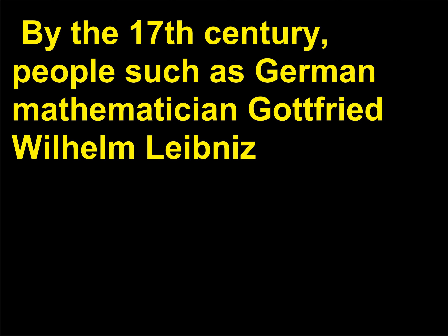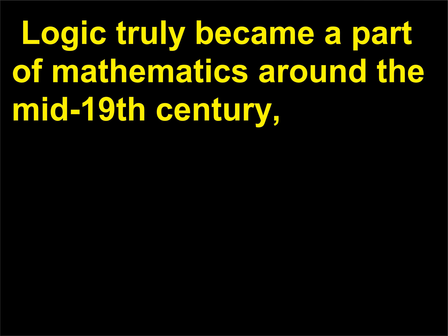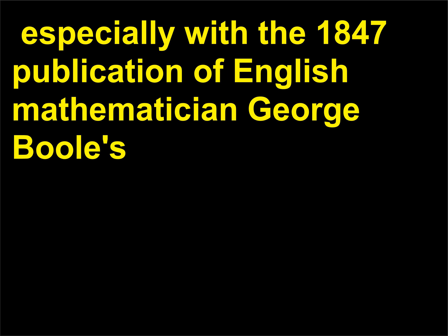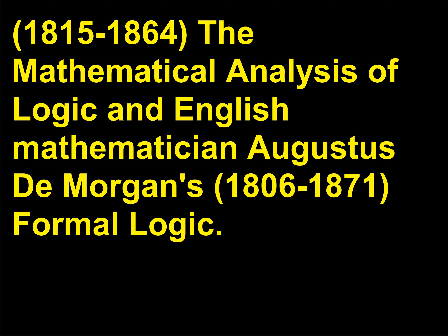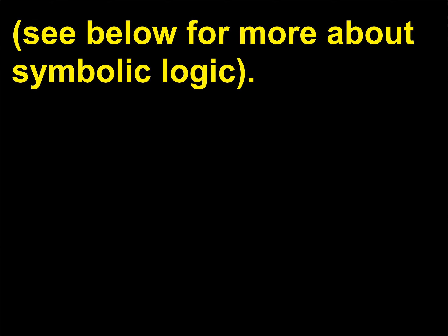It was not until the development of calculus that most of mathematics was put on a logical foundation. By the 17th century, people such as German mathematician Gottfried Wilhelm Leibniz (1646–1716) began to demand a more regular and symbolic way to express logic. Logic truly became a part of mathematics around the mid-19th century, especially with the 1847 publication of English mathematician George Boole's (1815–1864) The Mathematical Analysis of Logic, and English mathematician Augustus De Morgan's (1806–1871) Formal Logic.